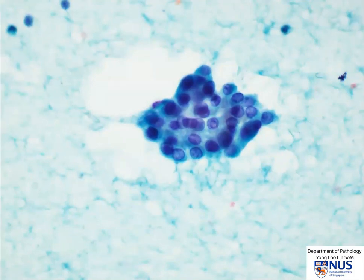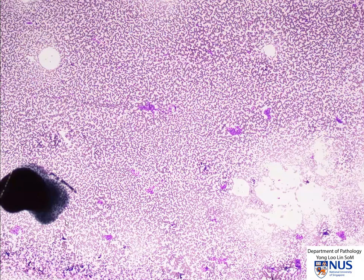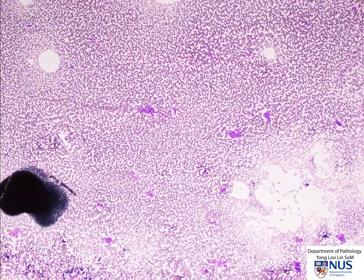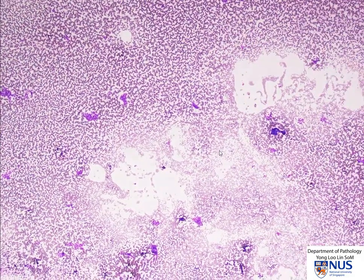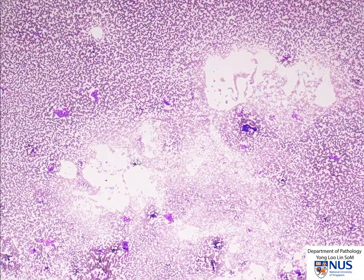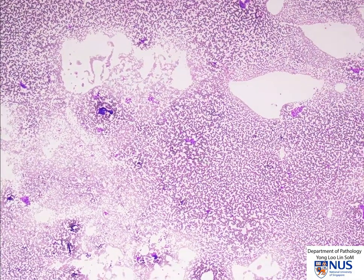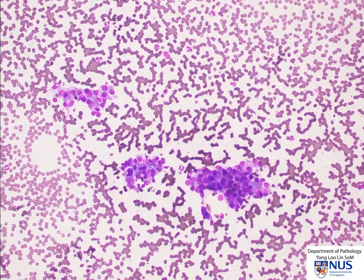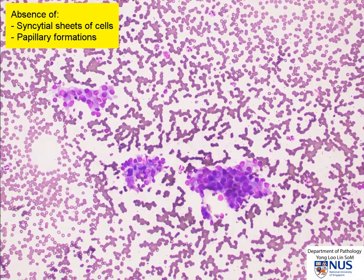Let's move on to have a look at the air-dried smear. At low power magnification, there is a similar repetitive appearance of small tight clusters with a suggestion of micro follicular formations. Some of them look as if they are in the form of small elongated trabeculae. Again, we have the apparent nuclear crowding, but we do not have syncytial sheets of cells or papillary formations.